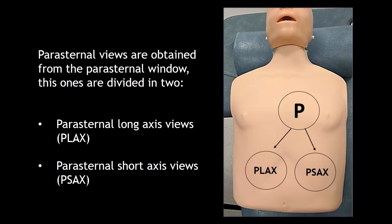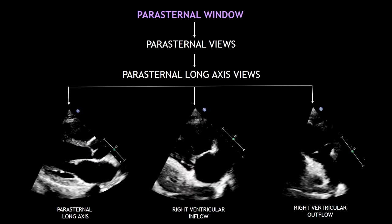Normally in echocardiography we start with the parasternal views, and these are obtained from the parasternal window. The parasternal views are divided into parasternal long axis views and parasternal short axis views. This is a diagram showing you how you can obtain these parasternal long axis views — for this you have to place the probe on the parasternal window and angulate or rotate it in a specific way.